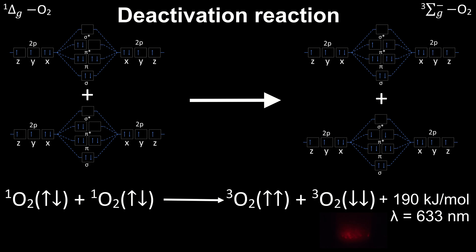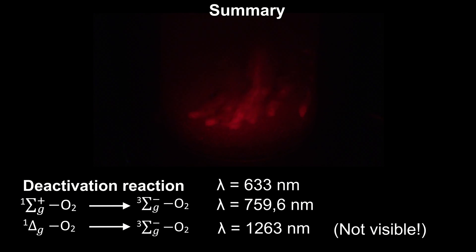So in the end, the visible light emitted in the preparation of singlet oxygen comes from the deactivation reaction and the transition from one of the singlet states into the ground state. This was the theory behind singlet oxygen.